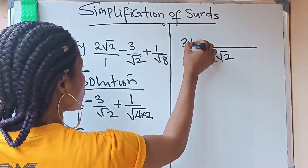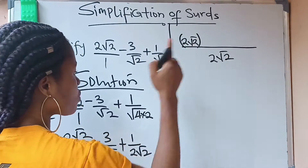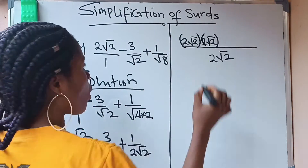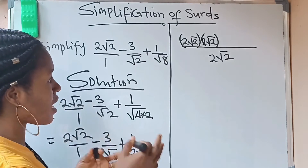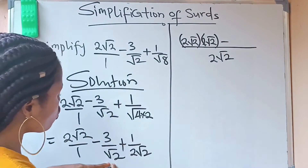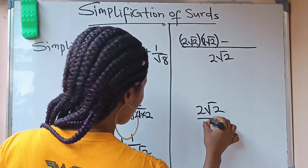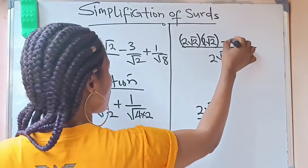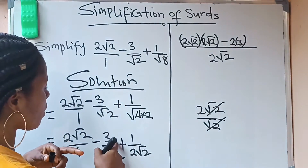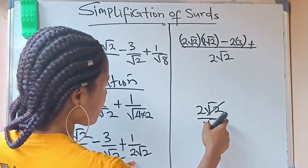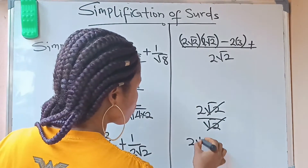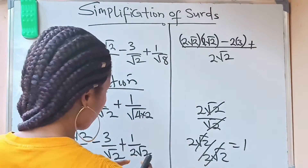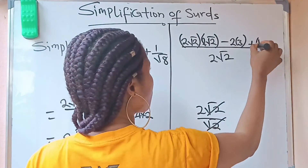When 1 divides 2 root 2 you get 2 root 2, so you multiply the first numerator (2 root 2) by 2 root 2 — just like you do with normal fractions. When root 2 divides 2 root 2, root 2 cancels root 2 and you are left with 2, so you multiply the 3 by 2. And 2 root 2 divided by 2 root 2 gives 1, so you multiply the 1 by 1.